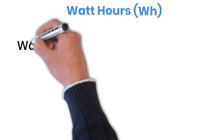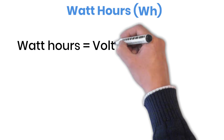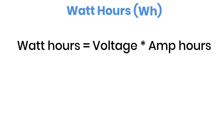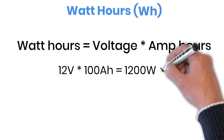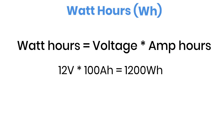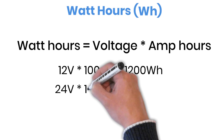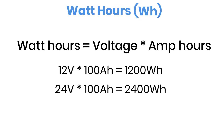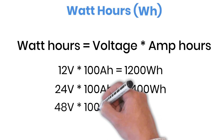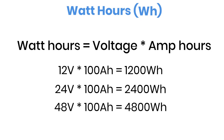That's where watt hours come in. Watt hours, or WH, measure the actual energy stored in the battery by multiplying the battery's voltage by its amp hour capacity. So a 12 volt battery rated at 100 amp hours holds 1,200 watt hours of energy. That same 100 amp hour battery at 24 volts stores 2,400 watt hours, and at 48 volts it stores 4,800 watt hours. Watt hours give a clearer picture of how much energy you really have.